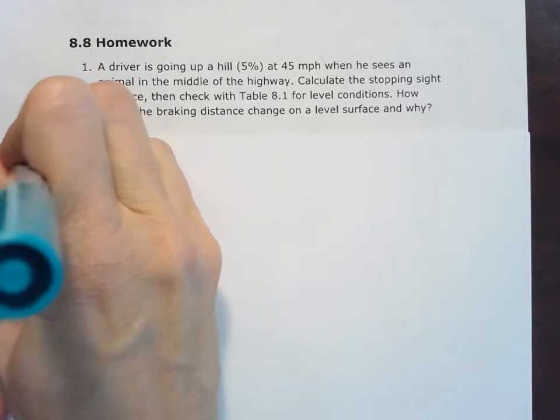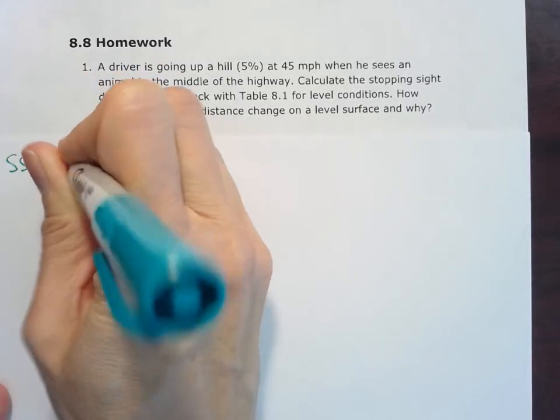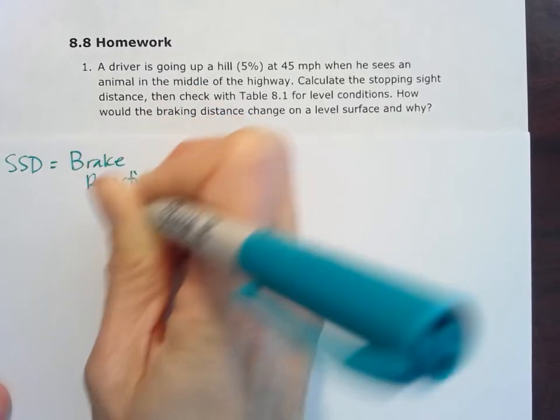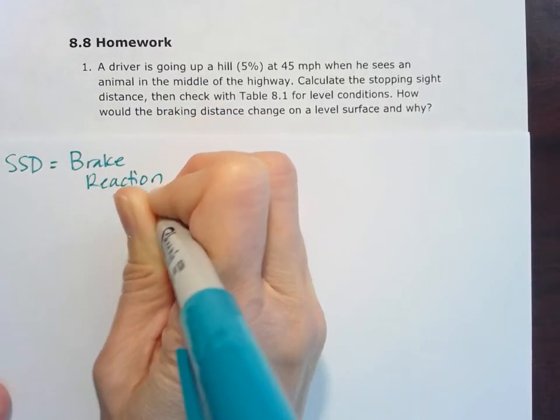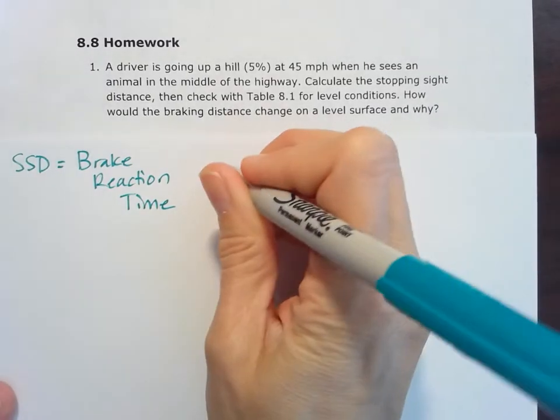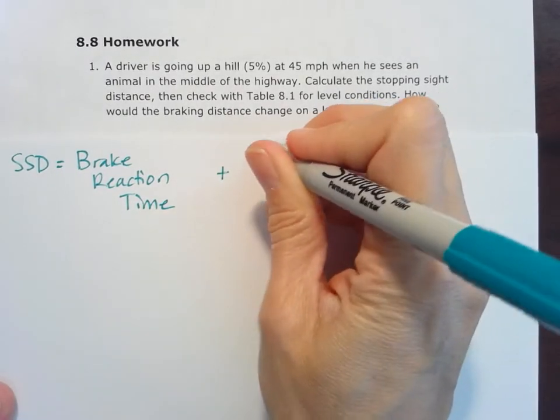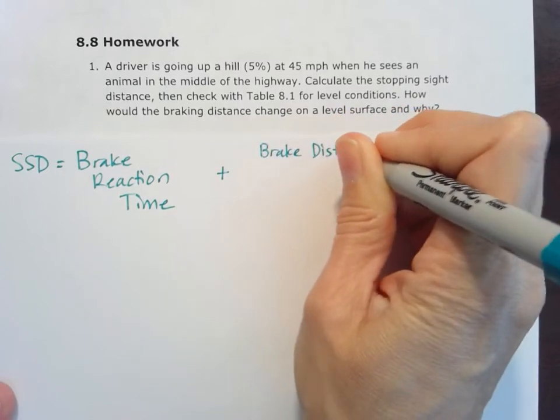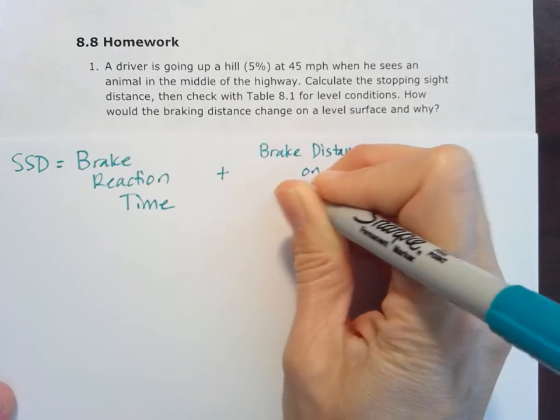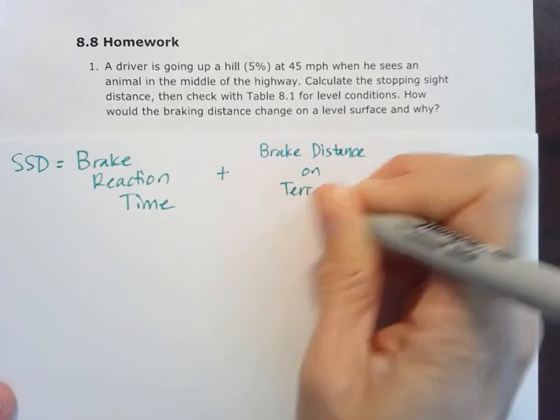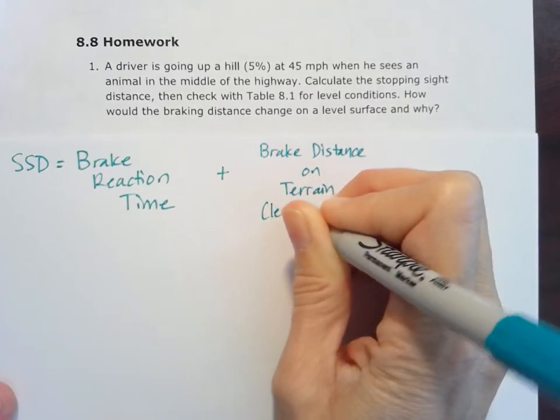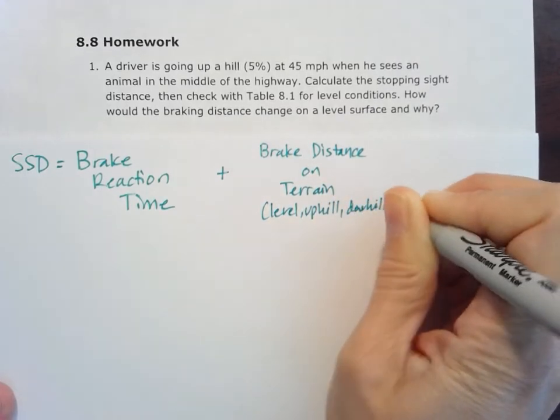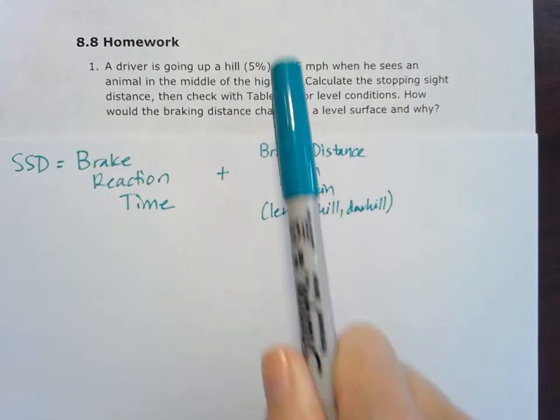So stopping sight distance is going to be equal to that brake reaction time, and that's going to be independent of grade. It doesn't matter that we're going uphill or level. But there's a second component and that is the brake distance, and that can be on different types of terrain. We can have level, uphill, or downhill. That's the component that's going to change with this uphill grade.